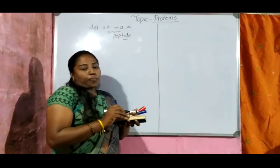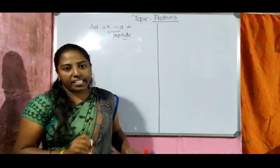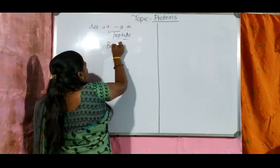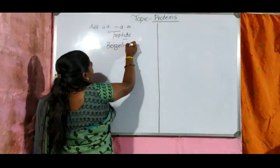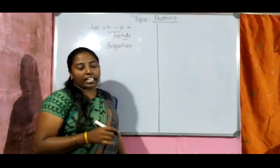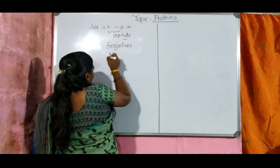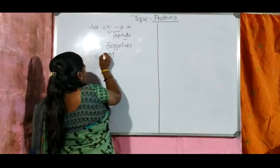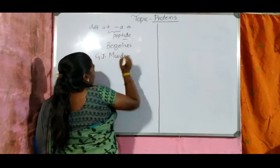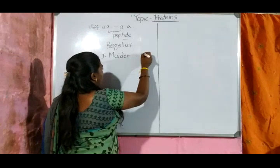The term protein was given by Berzelius, but it has been officially used by Mulder in the year 1838 in his book. The person G.J. Mulder used the term protein in his book in the year 1838.